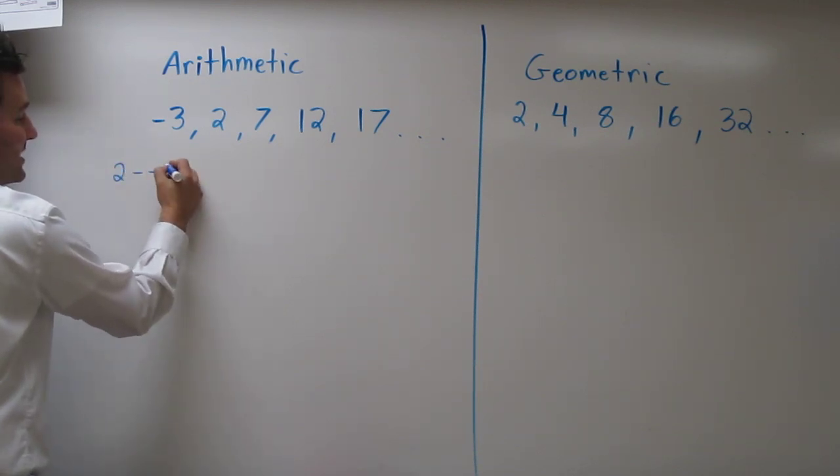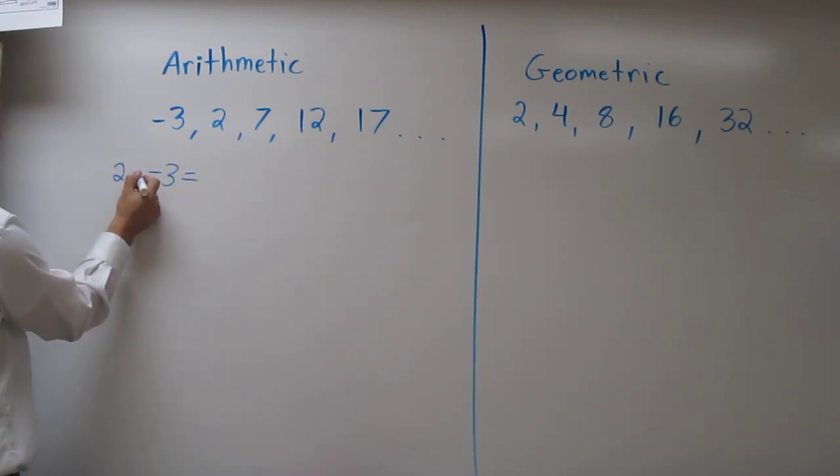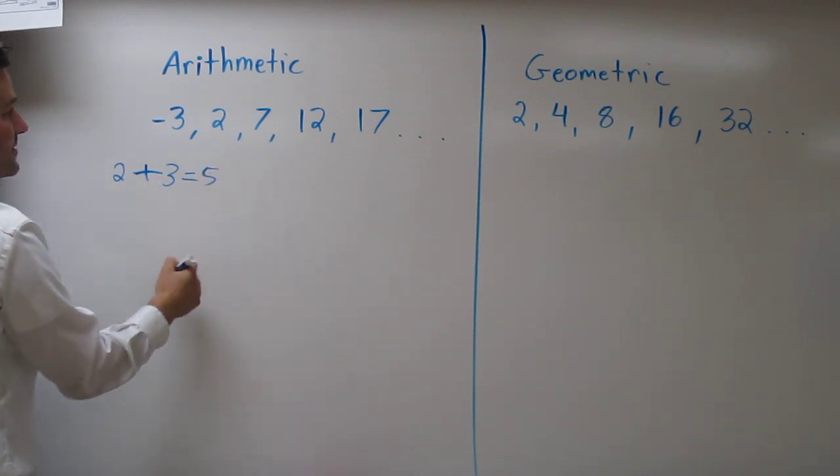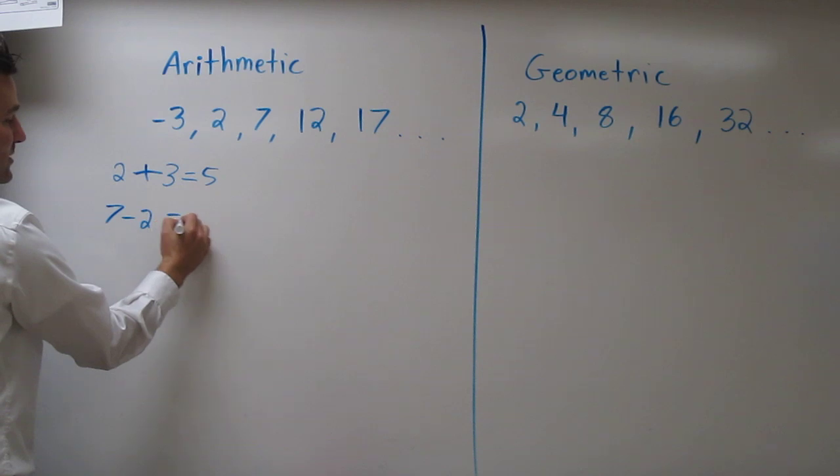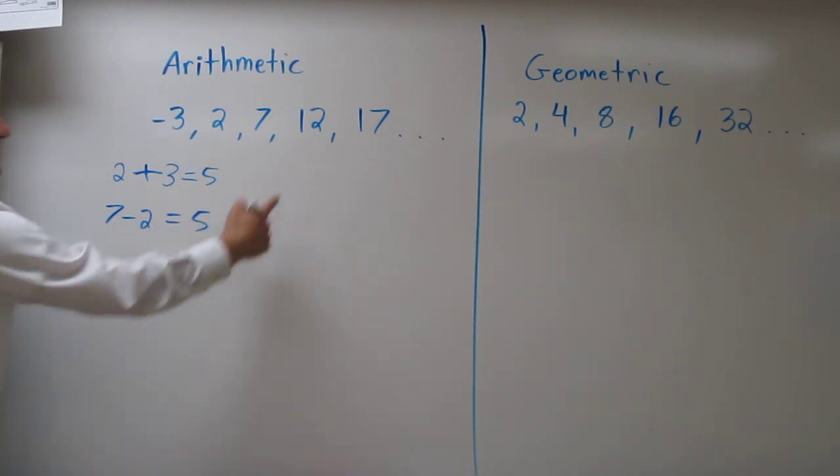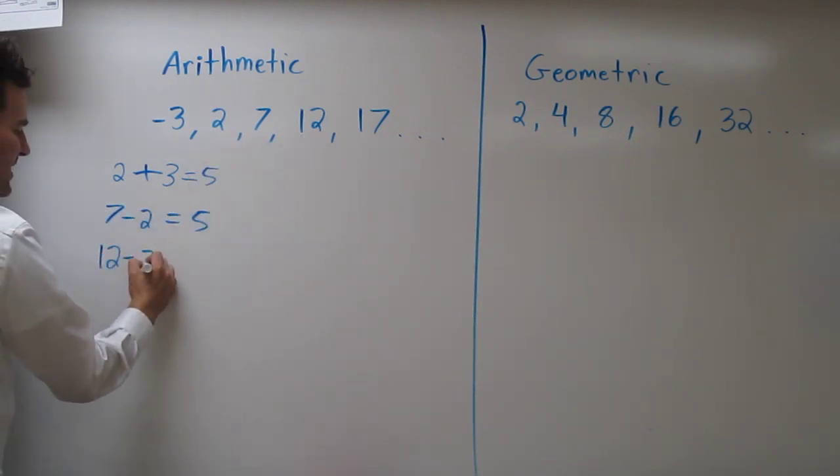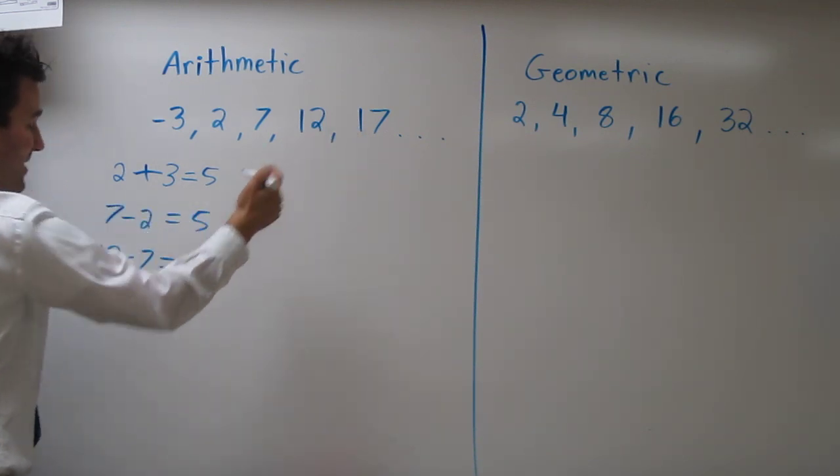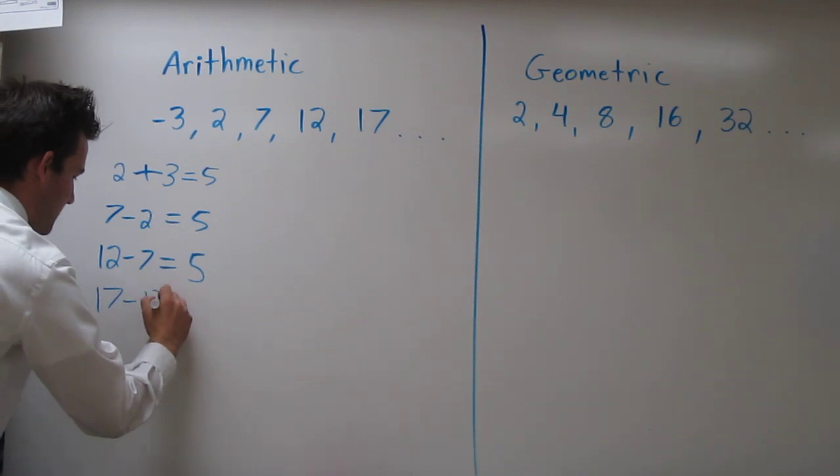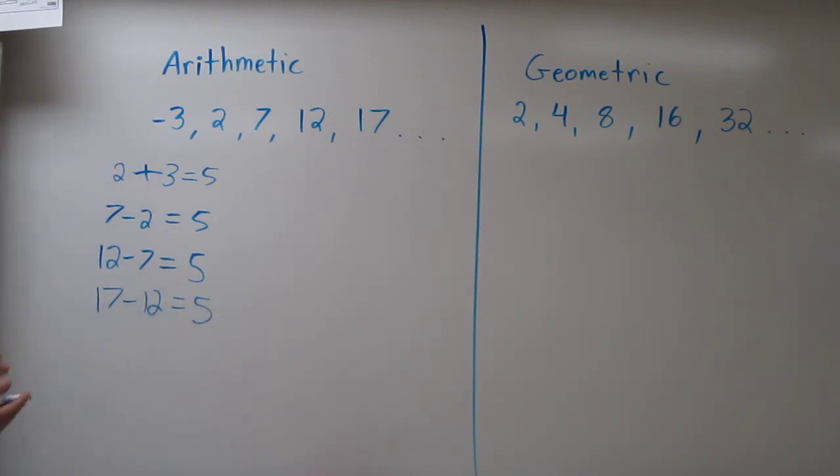Let's see, 2 minus negative 3 is, so 2 plus 3 is 5. Let's try it with the 7 and the 2. 7 minus 2 is 5. Let's try it with the 12 and the 7. 12 minus 7 is 5. And finally, 17 minus 12 is 5.